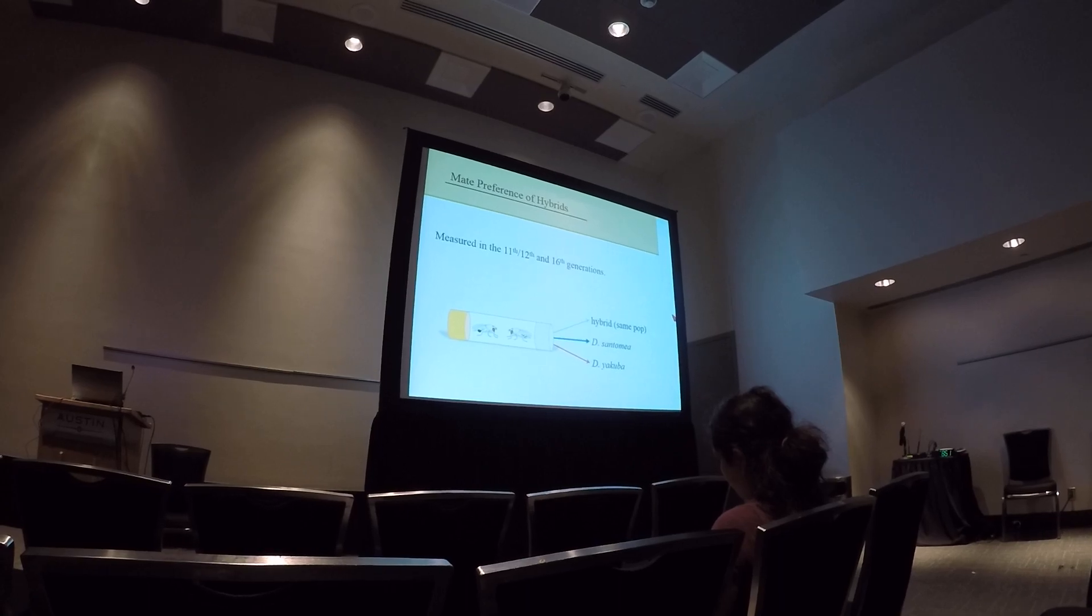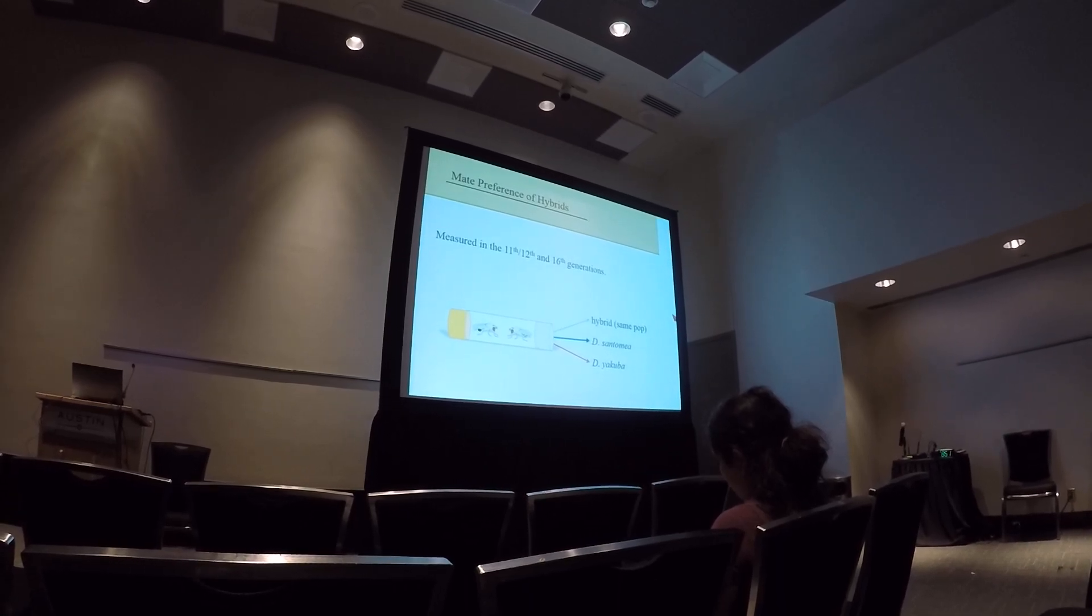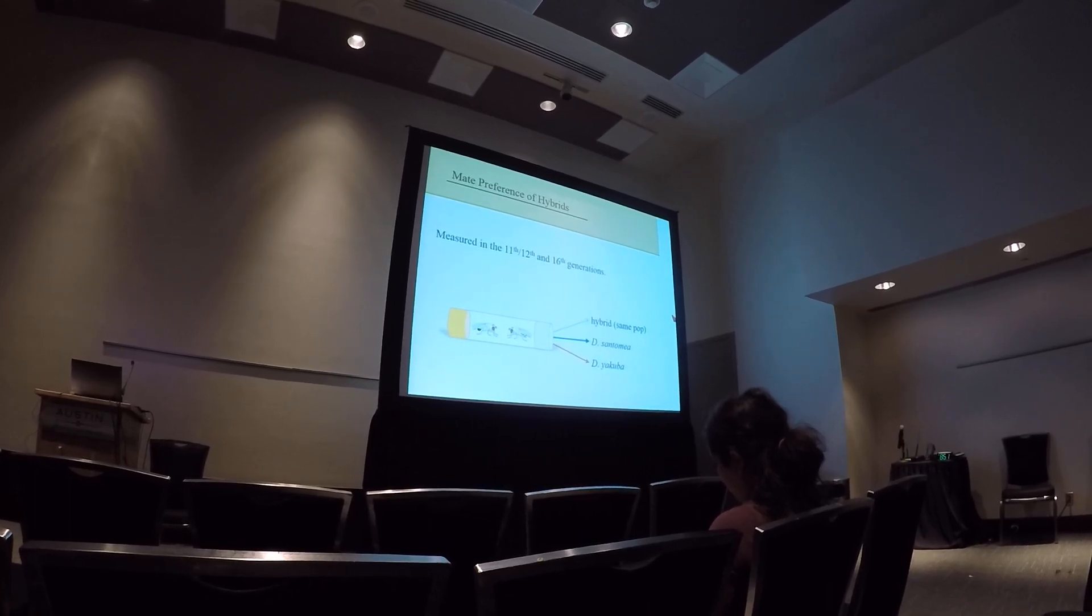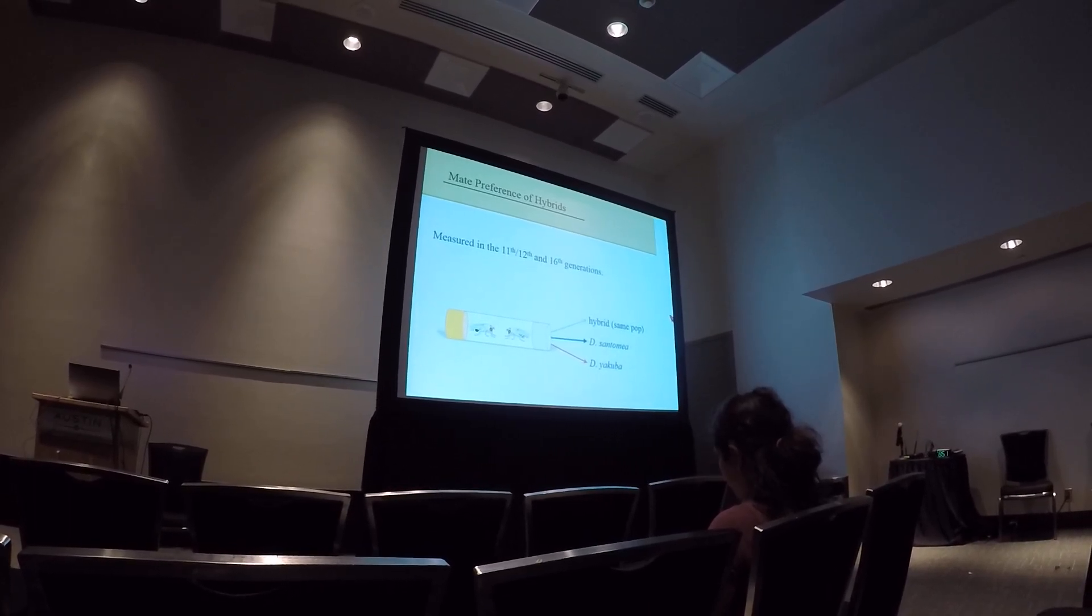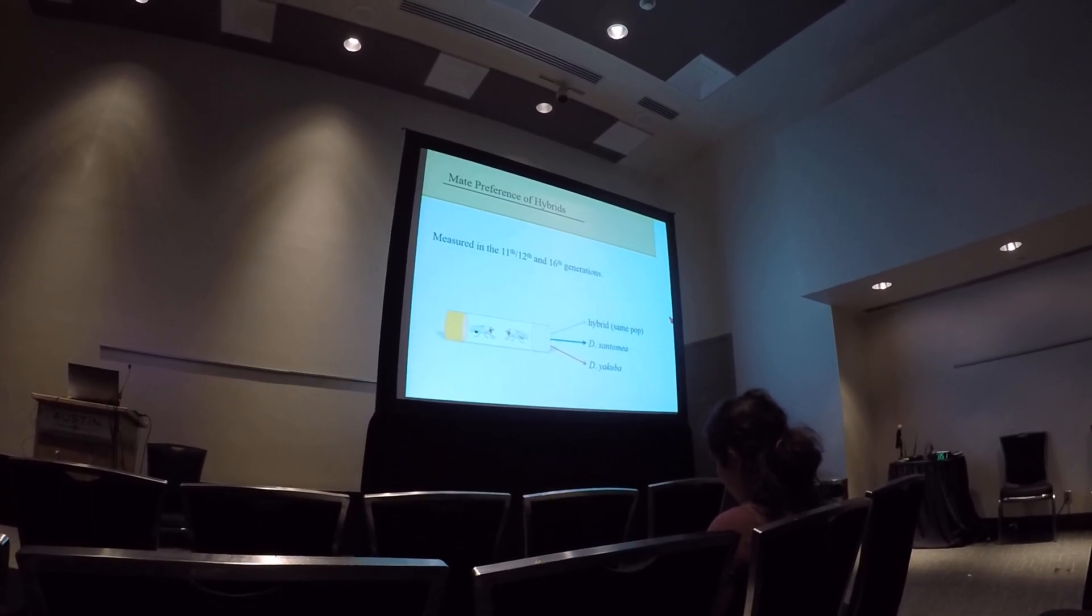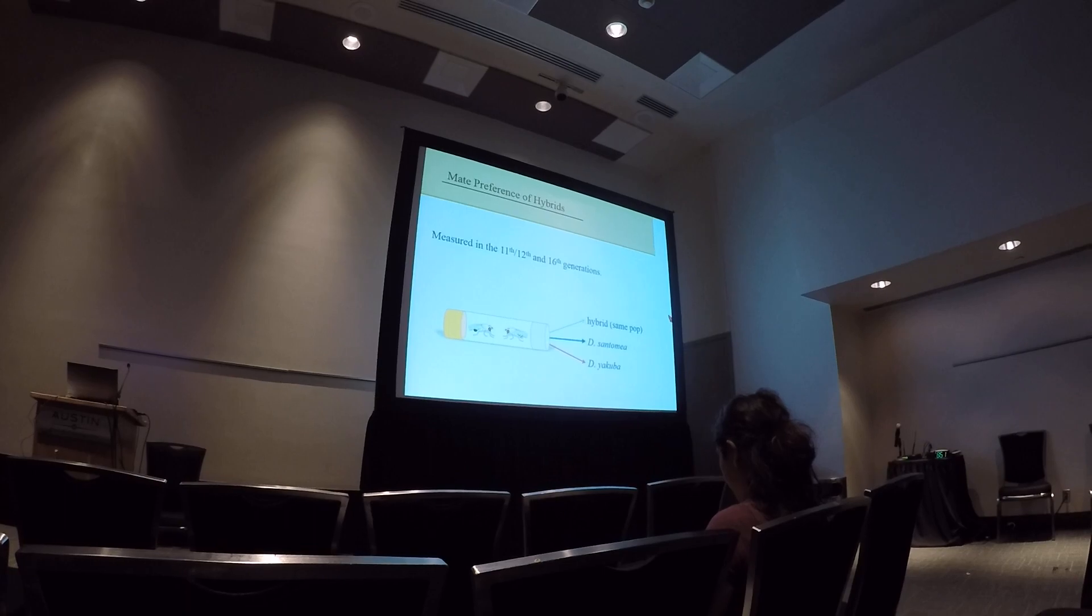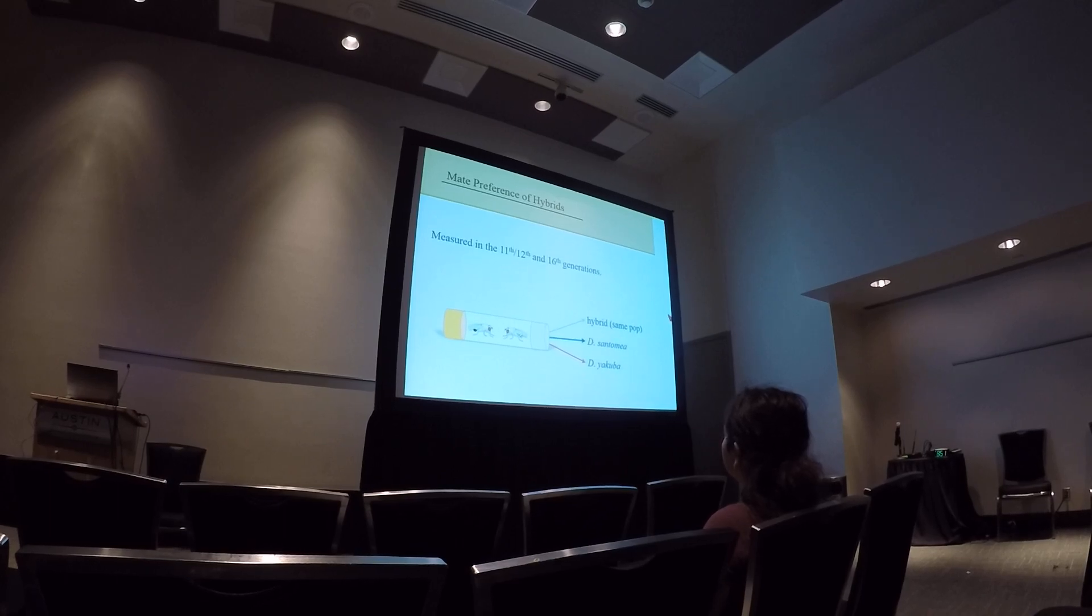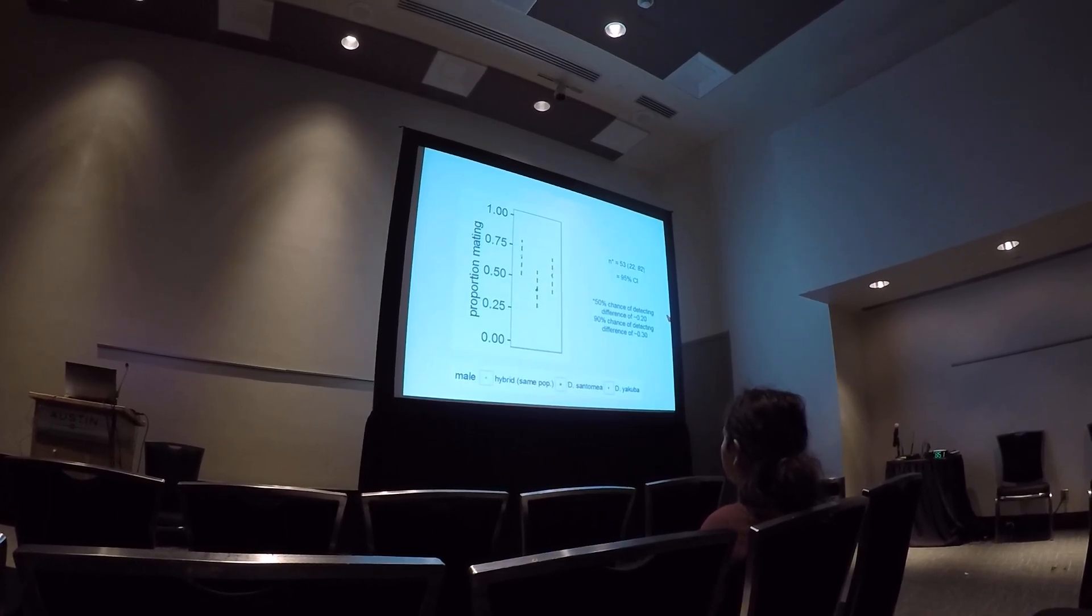We next measured female mate choice. And so how we do these trials, we put a female from a population in a vial, and we give her a male, and give her the opportunity to mate with that male, watch her for one hour, and score the time that she mates at. And so females were given males of any of three genotypes, either a hybrid male from her same population, or either of one of the parental species.